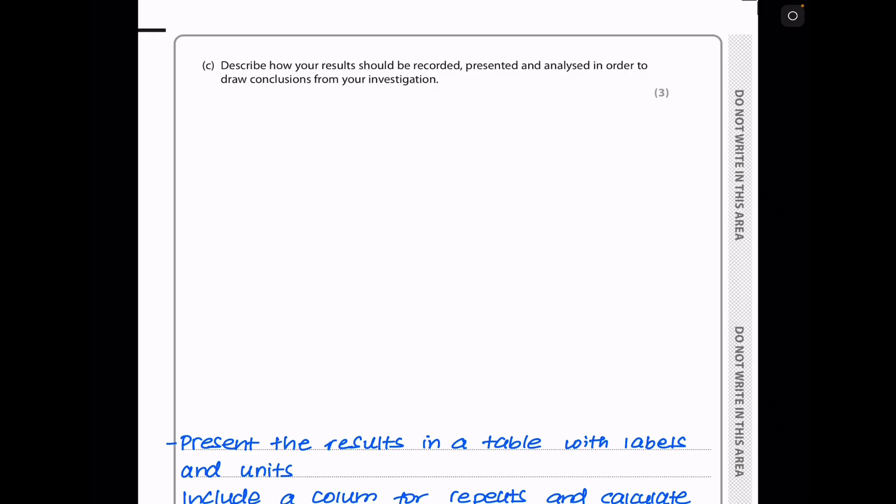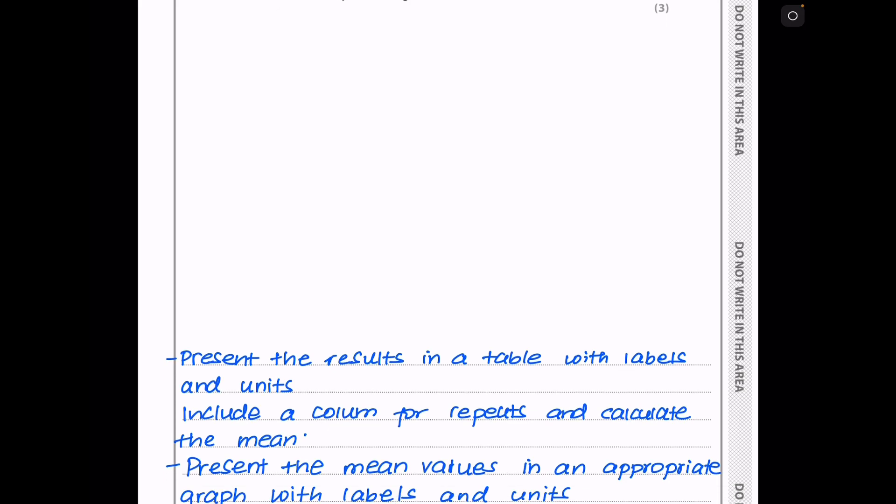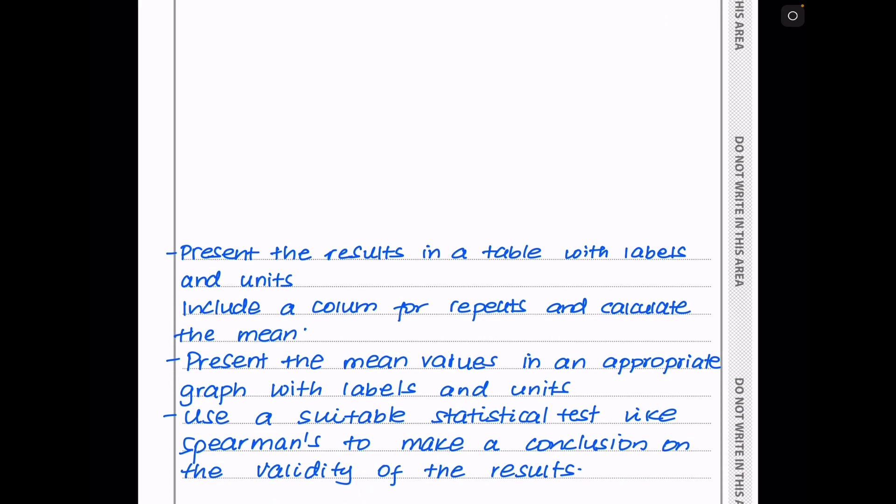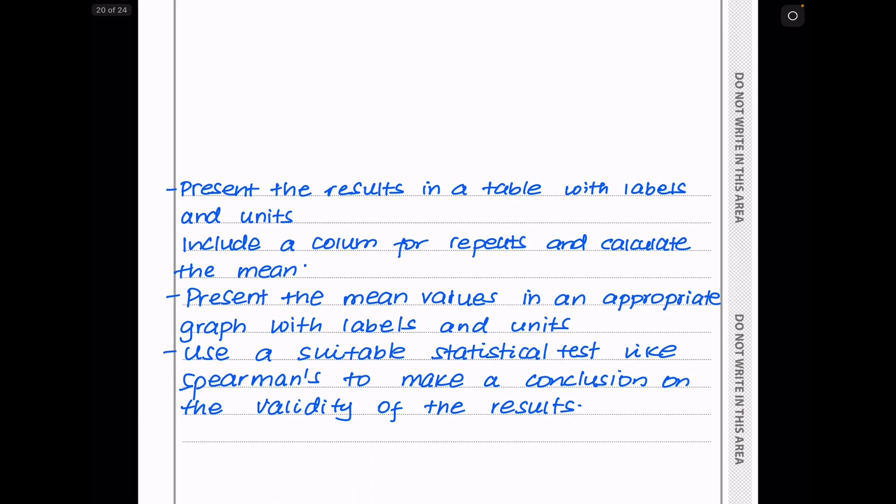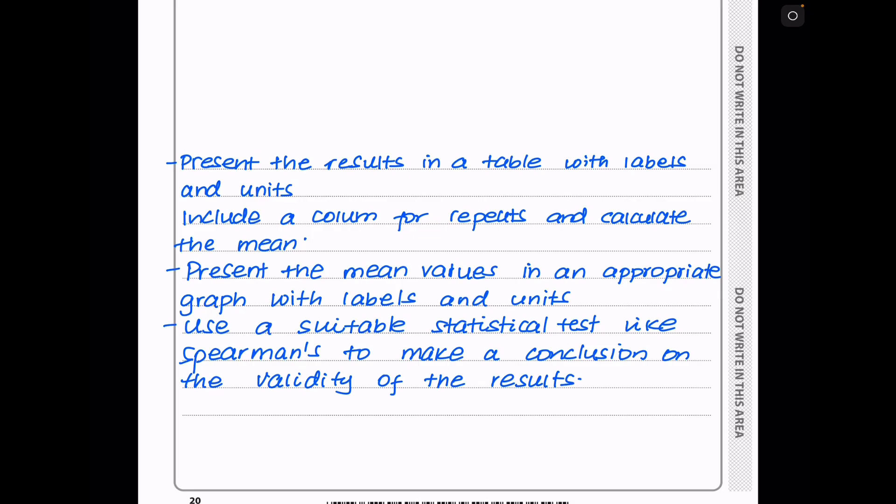In part C, they say describe how your results should be recorded, presented, and analyzed in order to draw conclusions from your investigation. You are not required to draw a table or a graph here. You are only required to write about it. But if you want, you can try to draw a sketch. So in my answer, I said you need to present the results in a table with labels and units. You need to include a column for repeats and calculate the means. Then present the mean values in an appropriate graph with labels and units. Then use a suitable statistical test. The experiment needs to make a conclusion on the validity of the results.